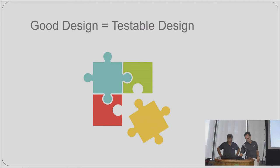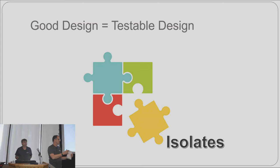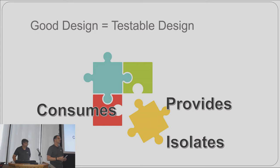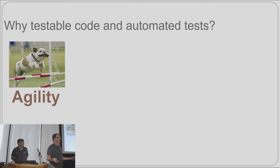So what is good design and testable design? Good code is a module that is isolated — it can stand on its own, independent, like a puzzle piece. It provides a well-defined interface, doesn't expose a lot of details, and exposes behavior. It consumes the same from the components it uses — it wants to understand the behavior of those components, not their internal workings. That reduces coupling, and we all know coupling is bad.